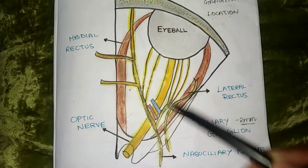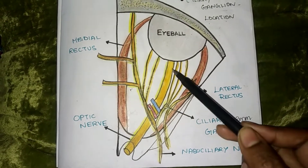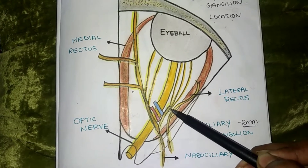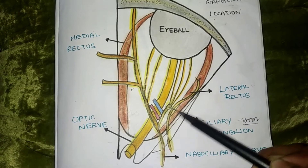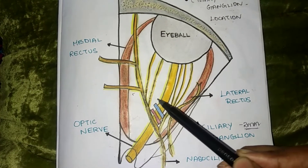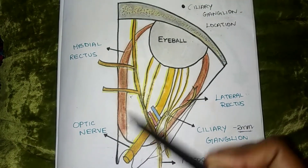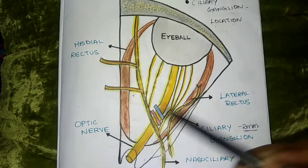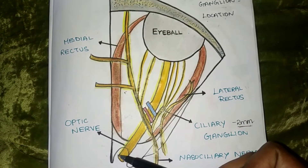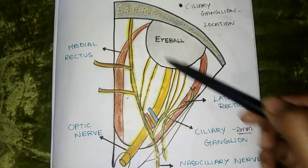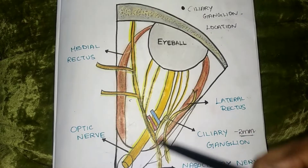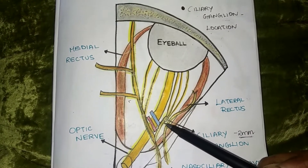This is the optic nerve and this is the lateral rectus muscle. The ciliary ganglion is located between the optic nerve and the lateral rectus muscle at the apex of the orbit. In the orbit, the medial rectus and lateral rectus muscles are visible, along with the eyeball and optic nerve. The nasociliary nerve branch is also attached at this location.